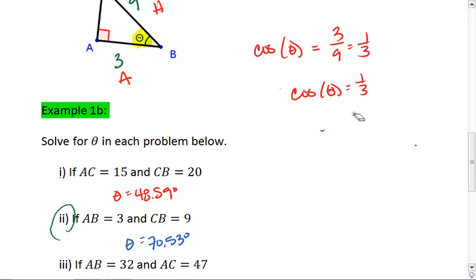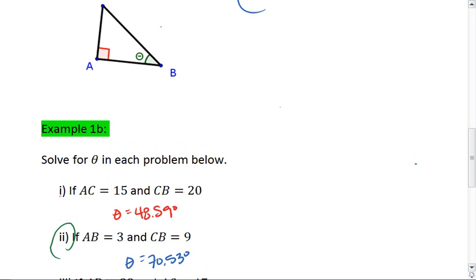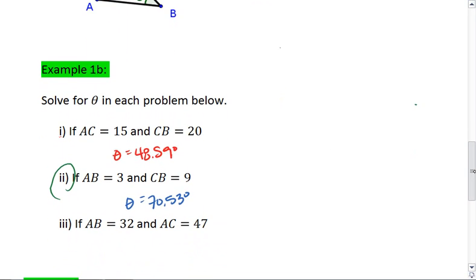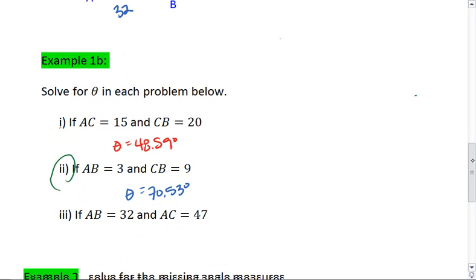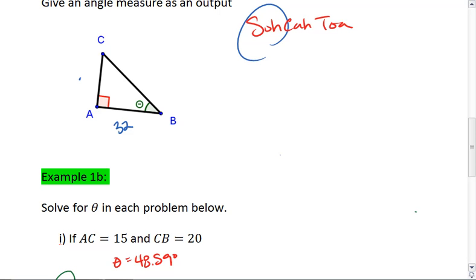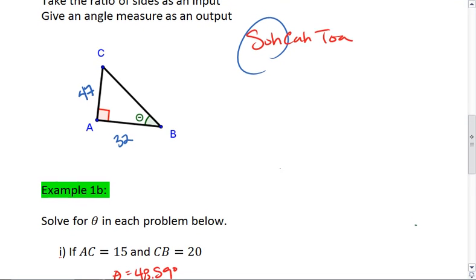Alright, one more example we're going to look at. AB is 32, and AC is 47. Again, take a moment, solve it on your own first. Pause the video and resume when you're ready to see your solution.